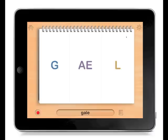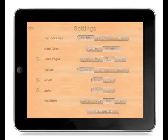Now let's look at the settings. Flipbook Case allows you to display the letters on the notebook pages in uppercase, lowercase, or in symbols from the International Phonetic Alphabet, or IPA. Let's change it to lowercase.